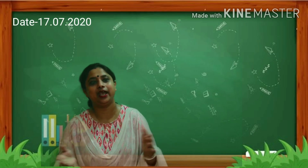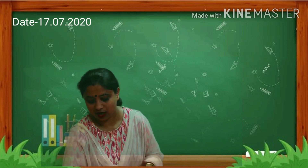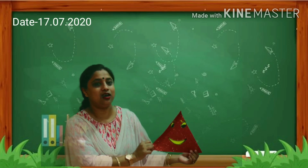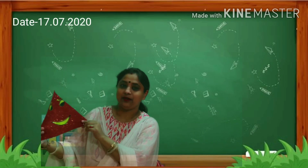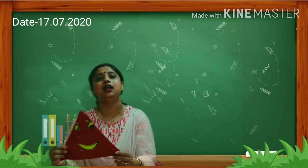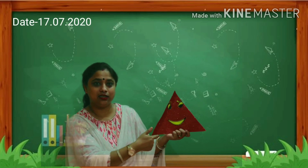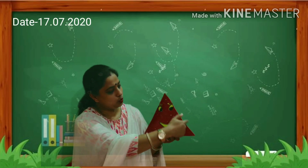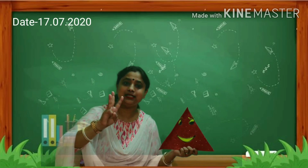Today we are going to learn about a new shape. Do you know what shape we are going to learn today? Today we are going to learn about the shape triangle. Hello children, my name is triangle! Now let's count how many sides are there in a triangle: one, two, and three.